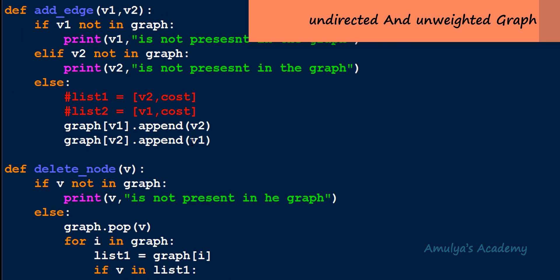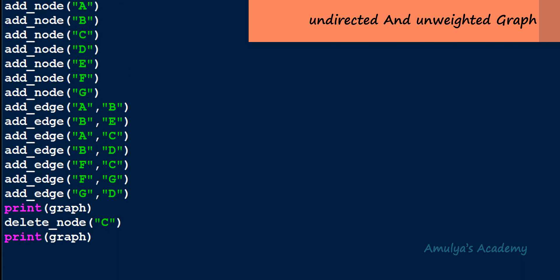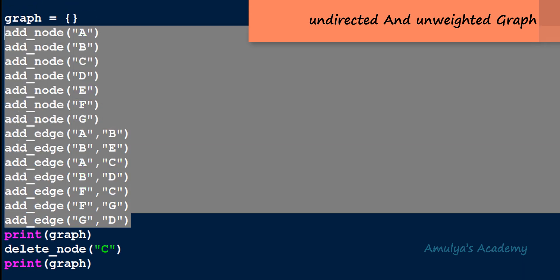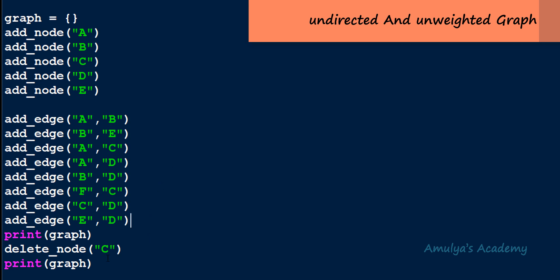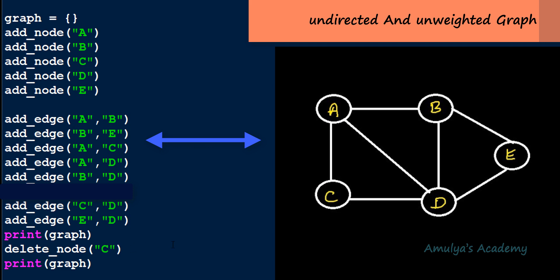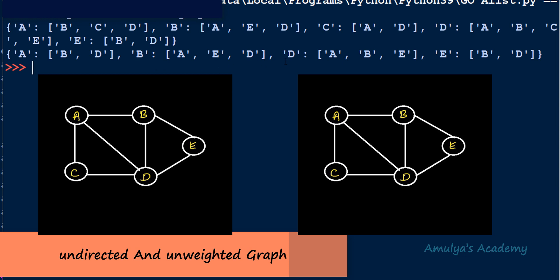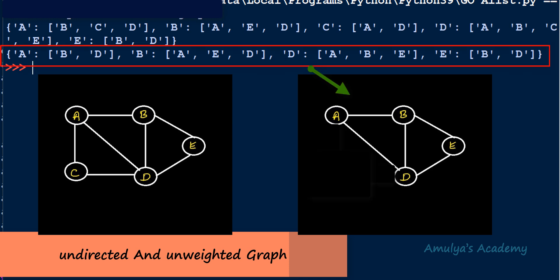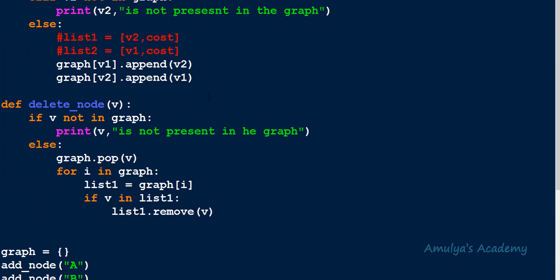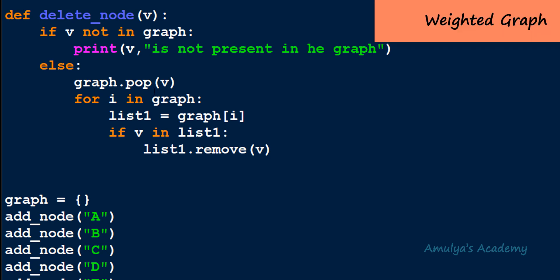This method also works for an undirected unweighted graph. After adjusting the add edge function and taking different values, when we delete node C and execute, we can see C is deleted. This method works correctly for both unweighted directed and unweighted undirected graphs.